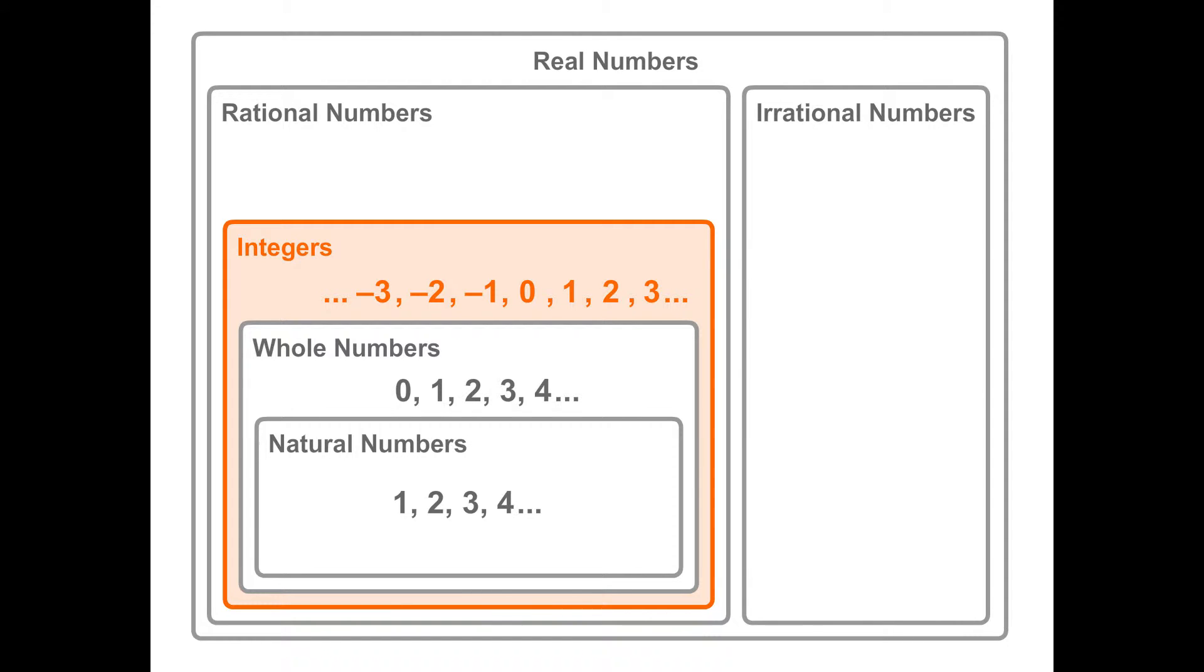Since every integer has an understood denominator of 1, the integers are a subset of fractions or the rational numbers. Adding irrational numbers with the rational numbers completes the hierarchy of real numbers, which are the numbers you encounter in introductory algebra.